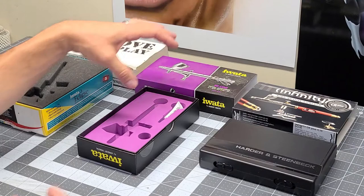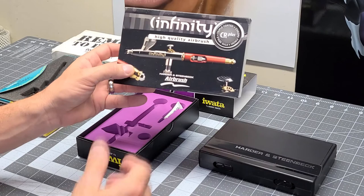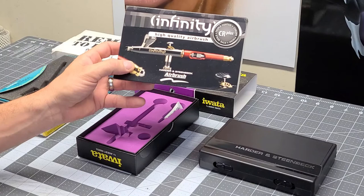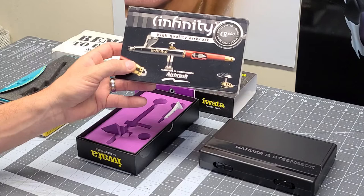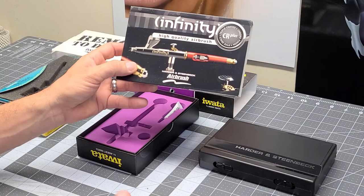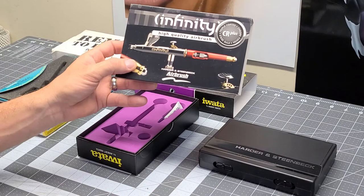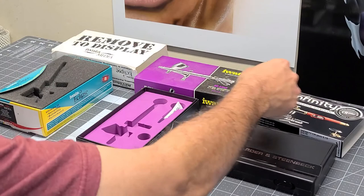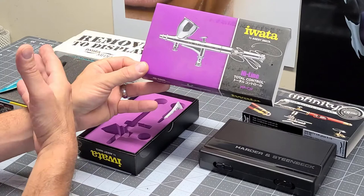And then my newest purchase was an Infinity by Harder & Steinbeck. This one has a 0.15 millimeter needle, which I got for doing some very fine detail. I didn't want to spend the expense for a micron. So I decided after doing some research on this - and if you stick around to the end, I'm going to give you a very interesting fact that I bet you didn't know about this airbrush. I did forget to mention that this airbrush is comparable in needle size to the Eclipse, just slightly thinner with a 0.3 needle.